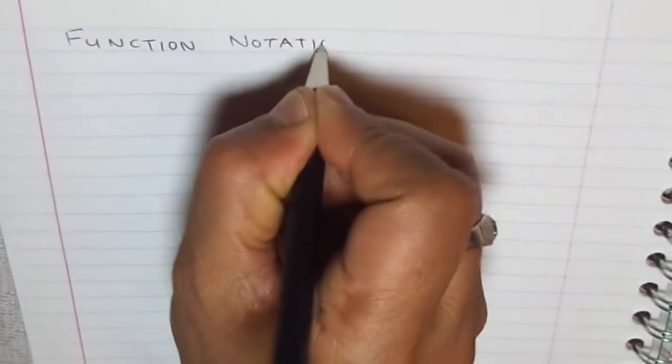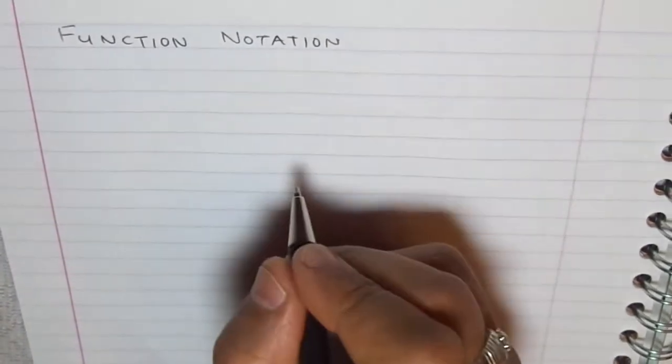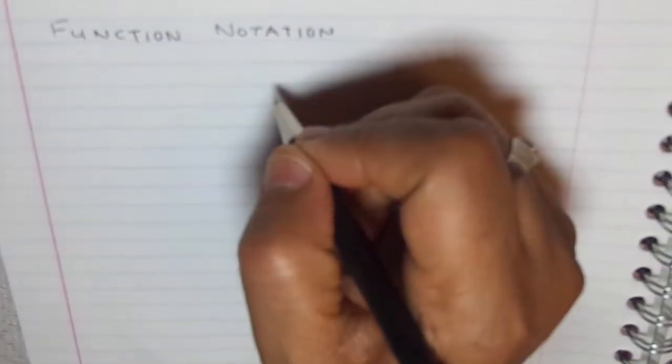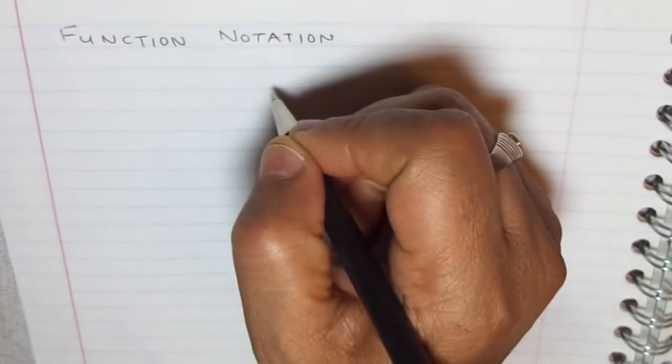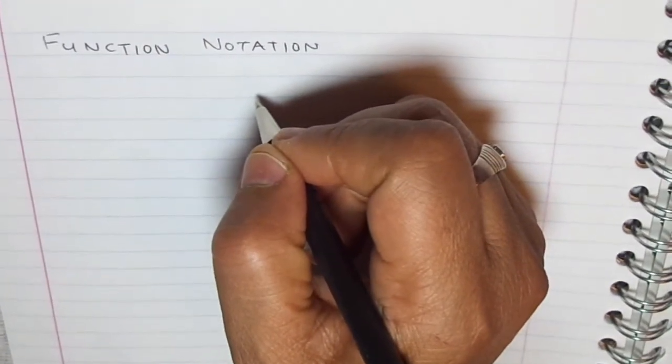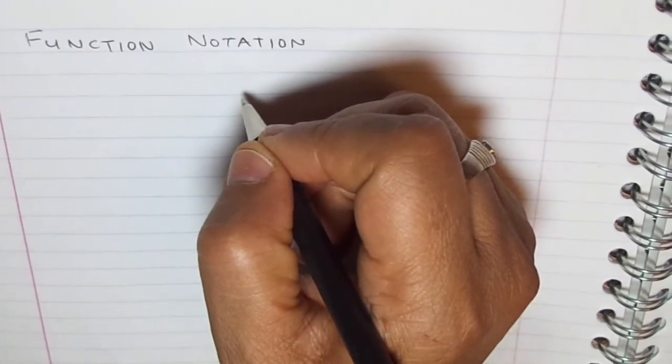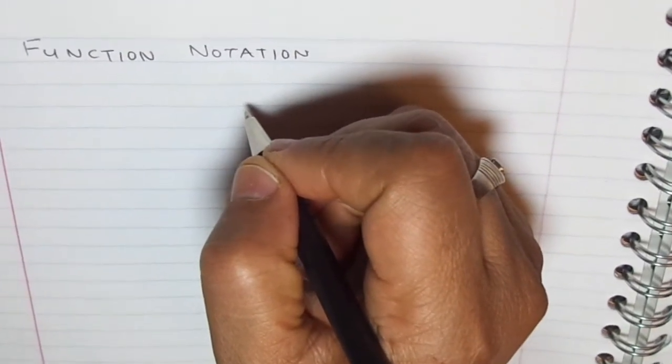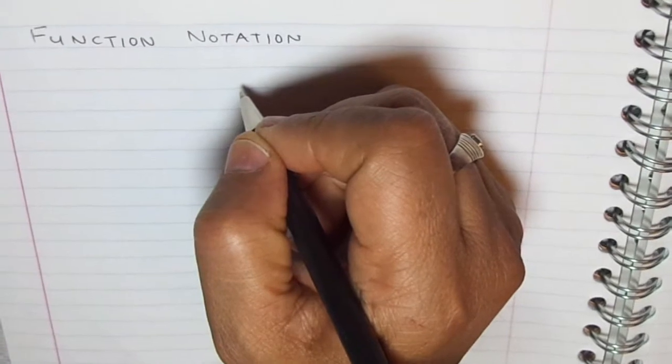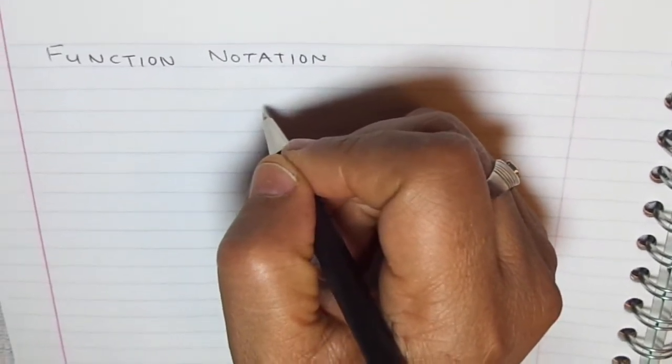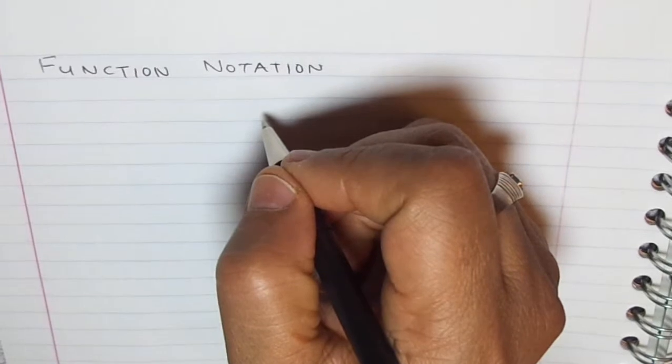Function notation. In this video we will talk about function notation. In a way we are trying to represent our functions in some standard form. We are trying to provide a name and a symbol. And function notation is also about finding value of the function. And we will also see how function notation provides flexibility in dealing with multiple equations.